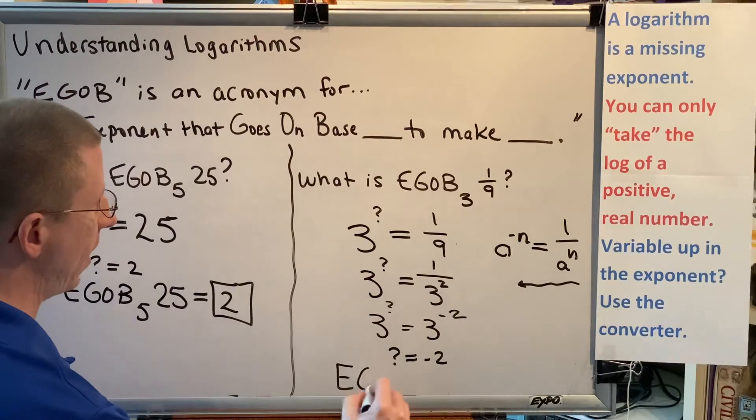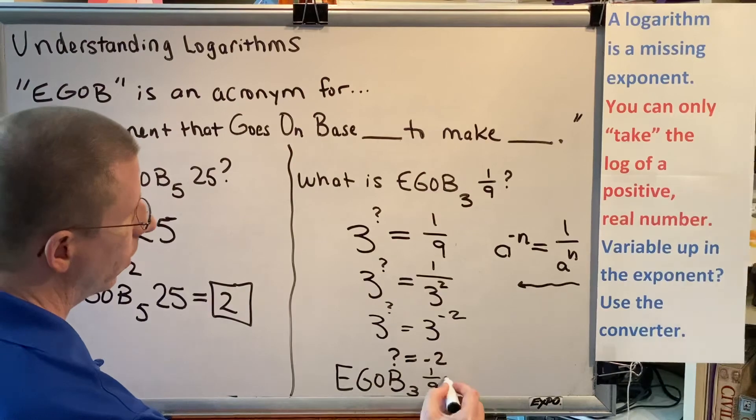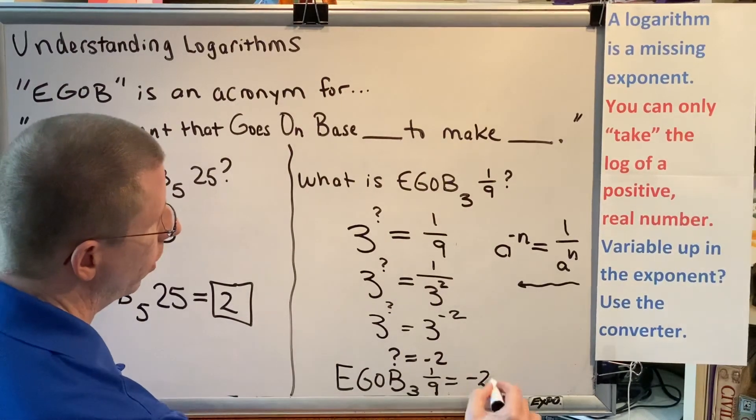So from this we conclude that EGOB 3, 1 ninth equals negative 2.